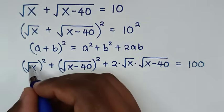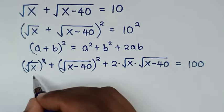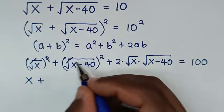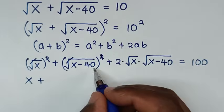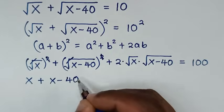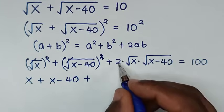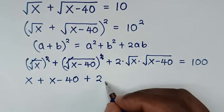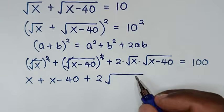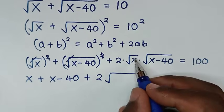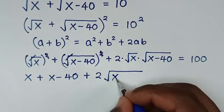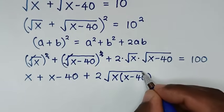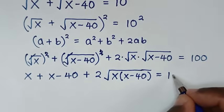In the next step, to simplify: the square root cancels the square, so we get x. Plus, the square root cancels the square, giving x minus 40. Then plus 2 times the common square root of x times x minus 40, so it becomes 2 times square root of x(x minus 40), all equal to 100.